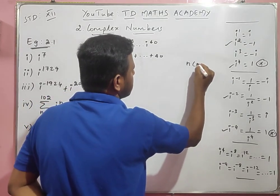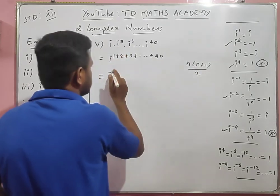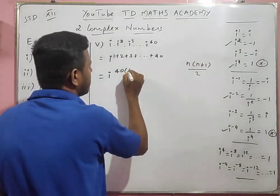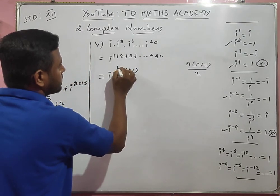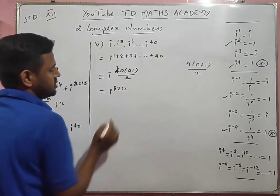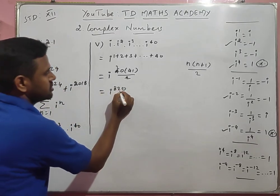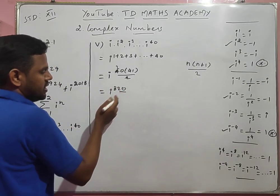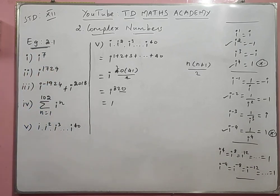Using the formula for sum of natural numbers up to n: n(n+1)/2, with n = 40: 40 × 41 / 2 = 820. So we get i power 820. Since 820 is a multiple of 4 (20 × 4 × ... ), i power 820 equals 1.